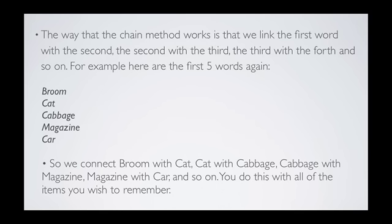The way the chain method works is that we link the first word with the second, the second with the third, the third with the fourth, and so on. For example, here are the first five words: broom, cat, cabbage, magazine, and car. We connect broom with cat, then cat with cabbage, then cabbage with magazine, magazine with car, and so on — with all the items you wish to remember. So if you have a hundred items, you can still remember all of them just by connecting each previous image with the next.